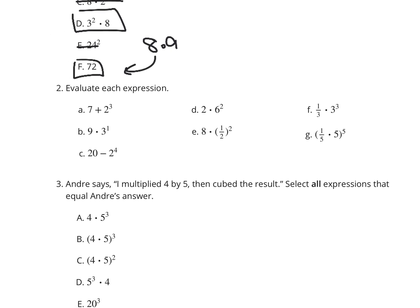Now as we go on to question 2, we have evaluate these things. 2 to the third power plus 7. Well, that's 7 plus 8, which is 15. 2 times 6 squared, that's going to be 2 times 36, which is 72.